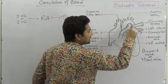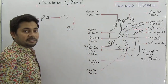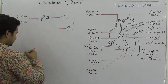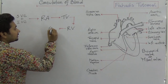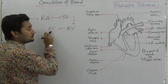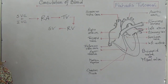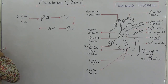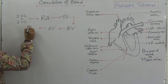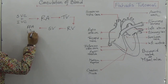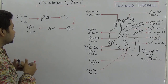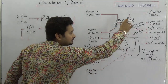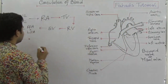From the right ventricle, blood passes through the semilunar valve and goes to the right pulmonary artery and the left pulmonary artery. Through both the right and left pulmonary arteries, the blood reaches the lungs.